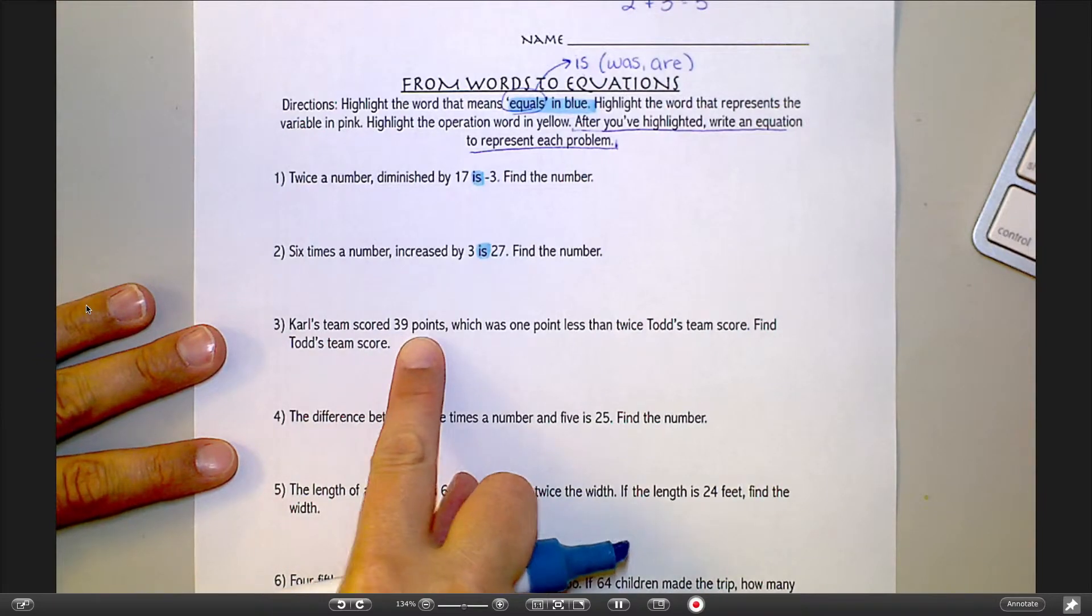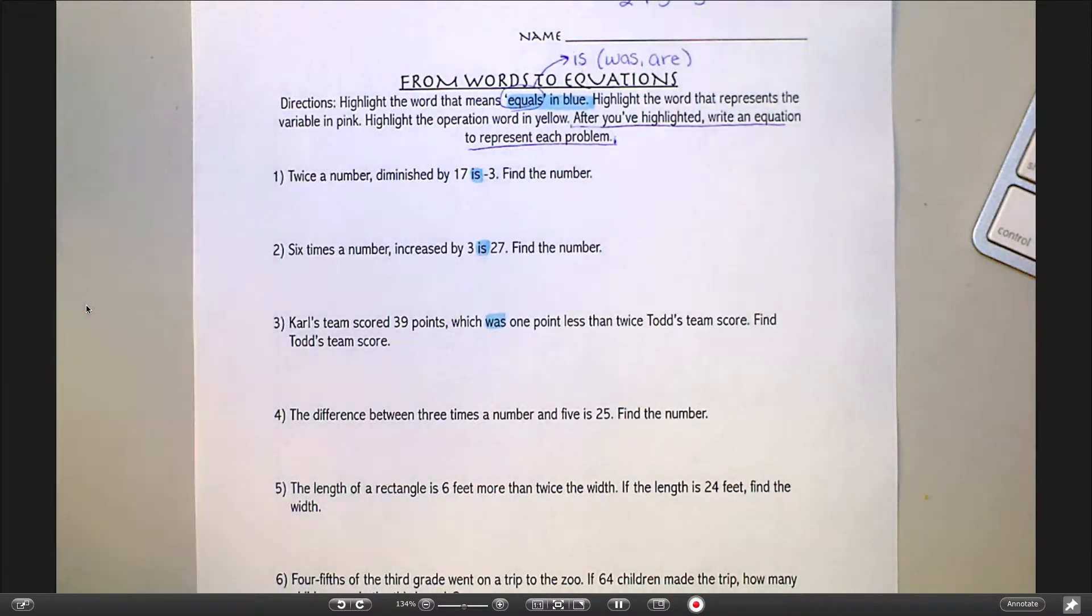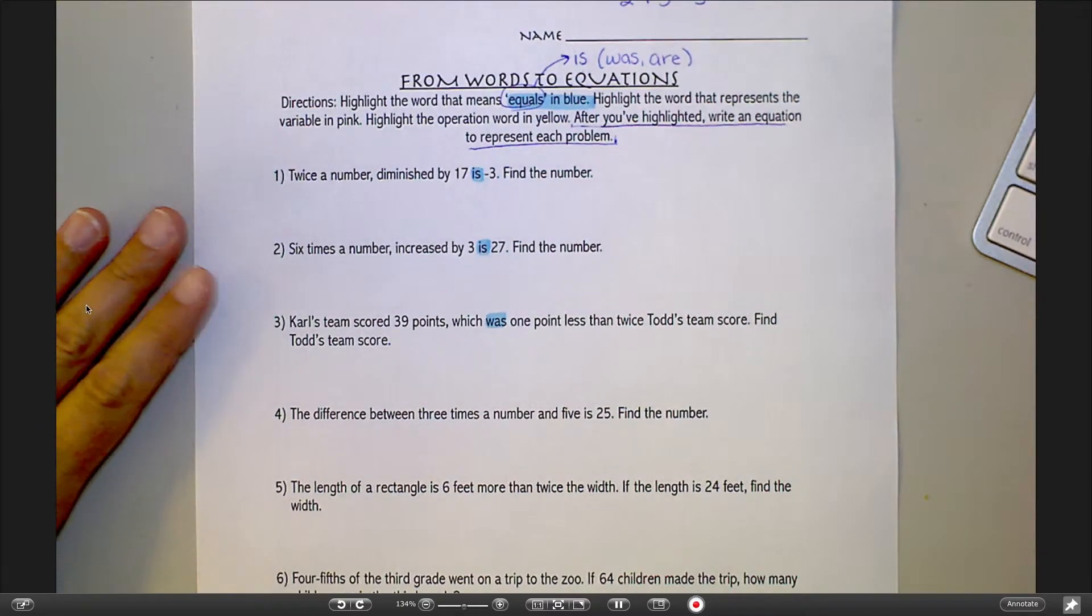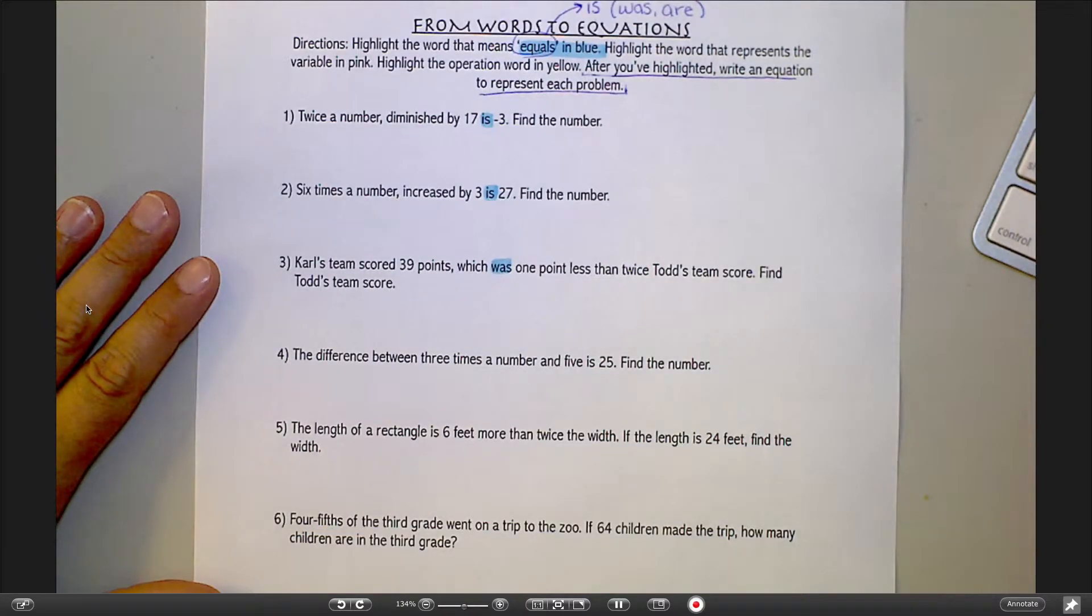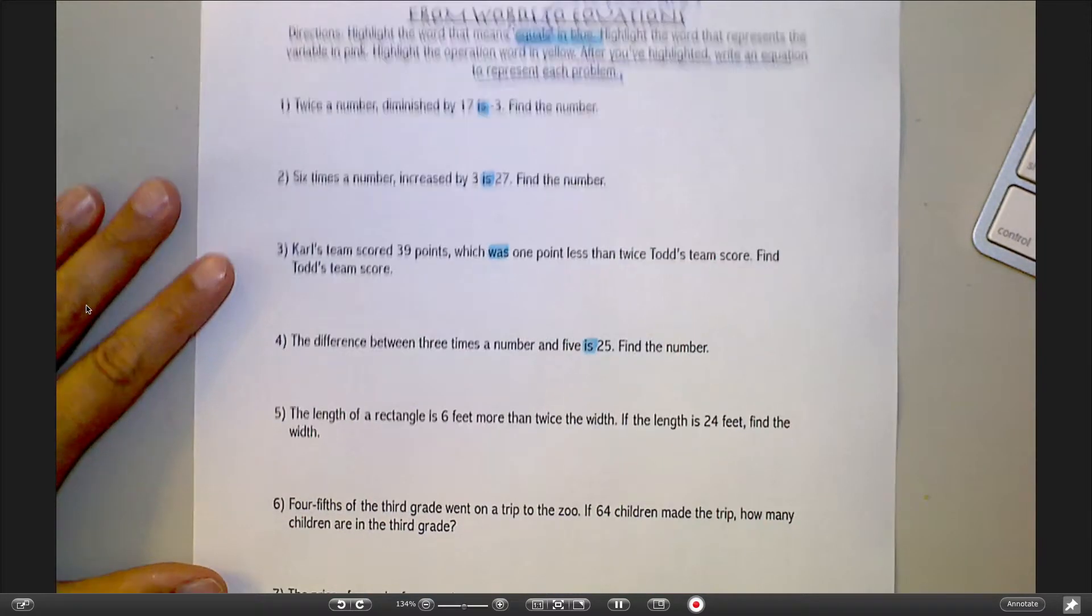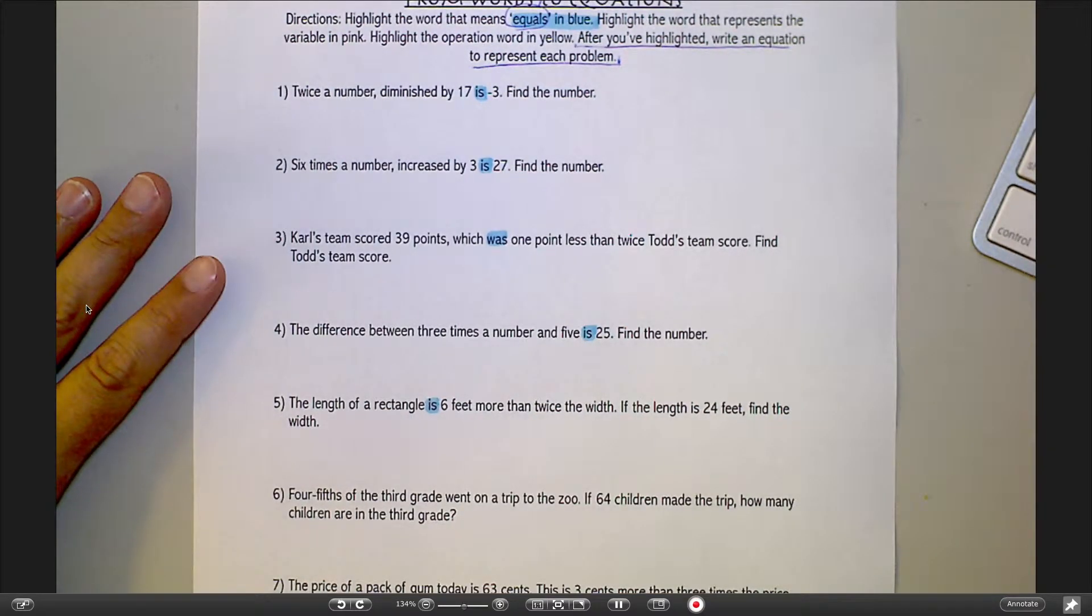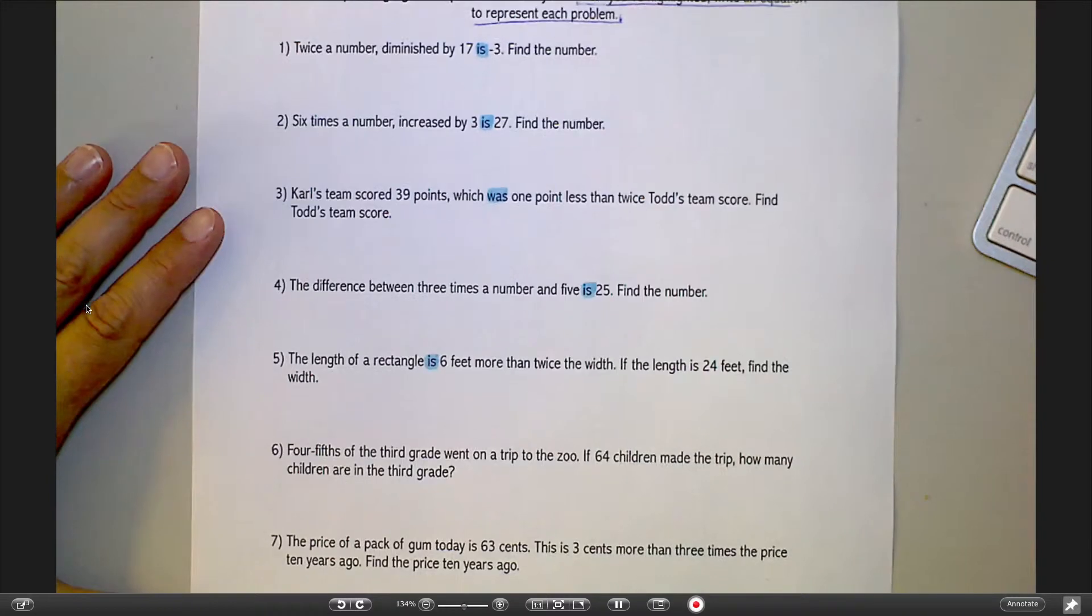Carl's team scored 39 points, which was, oh there's one of those tricky ones, which was 1 point less than blah blah blah. Right now all I care about is that is. The difference between 3 times the number and 5 is 25.